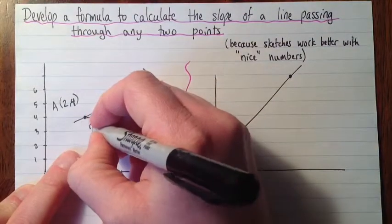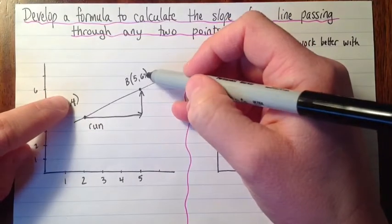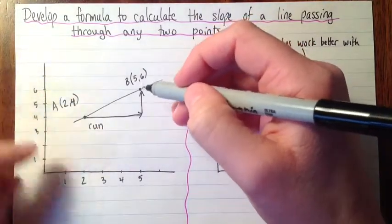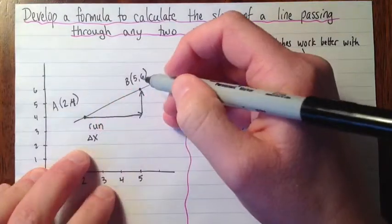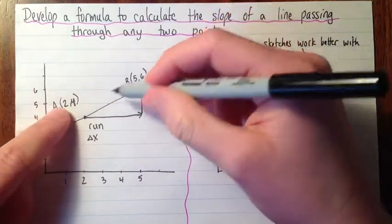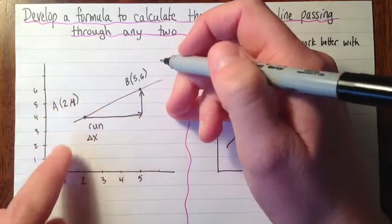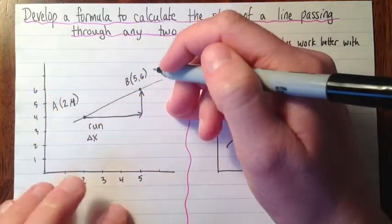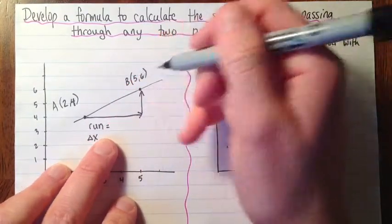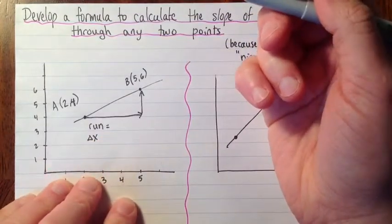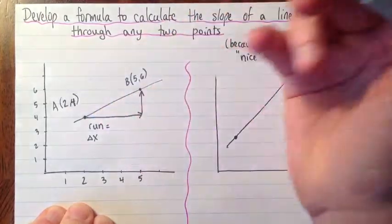So the run here. The question is, the run is the change in X. And some people would call this delta X to mean change in X. So how much do we go over to get from 2 to 5? So what's the run to get from 2 to 5 on the X axis? So you probably know the answer to that. But what I'm going to do is we'll write down how we could calculate that. Suppose those were big numbers or messy numbers. How do we figure it out? Well, we just do 5 take away 2.